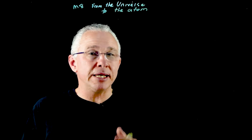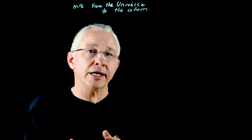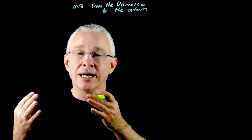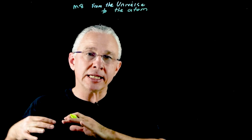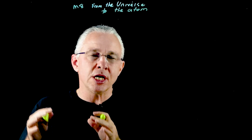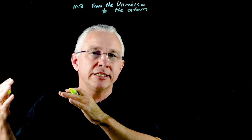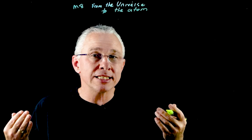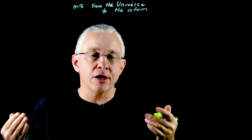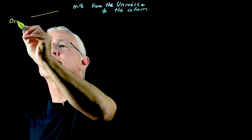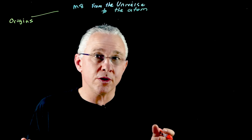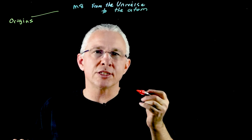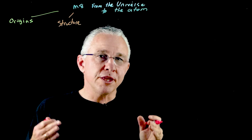Module 8 is called From the Universe to the Atom. The module is divided up into five key inquiry questions that ask some important questions about our understanding of the elements. As we look at the inquiry questions, we see how our understanding of science develops as we build models based on evidence. The first inquiry question asks: what evidence is there for the origin of the elements? The second inquiry question asks: how is it known that the atom is made up of protons, neutrons, and electrons?